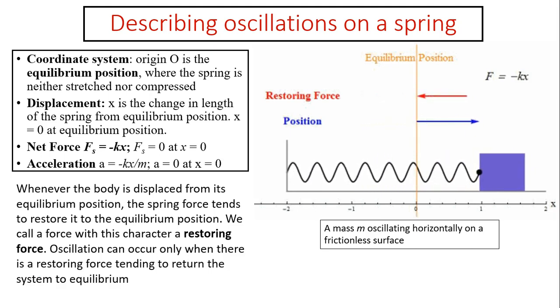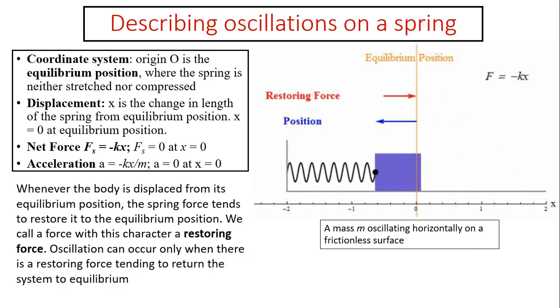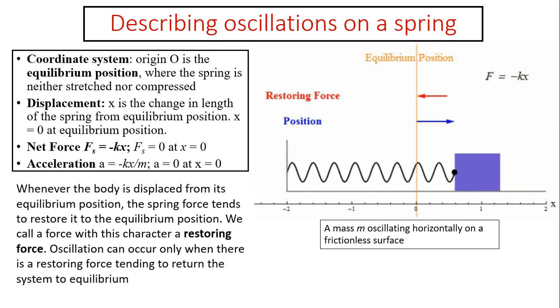Another thing we want to define is the net force on this object. The net force, according to Hooke's Law, equals kx. But since F and x are always in the opposite direction, we have F equals negative kx.